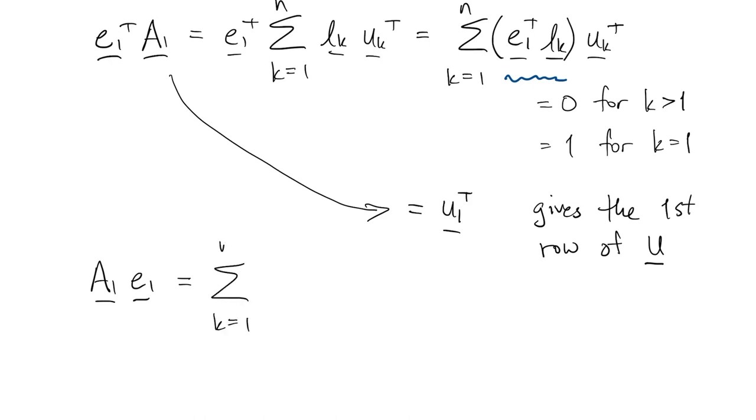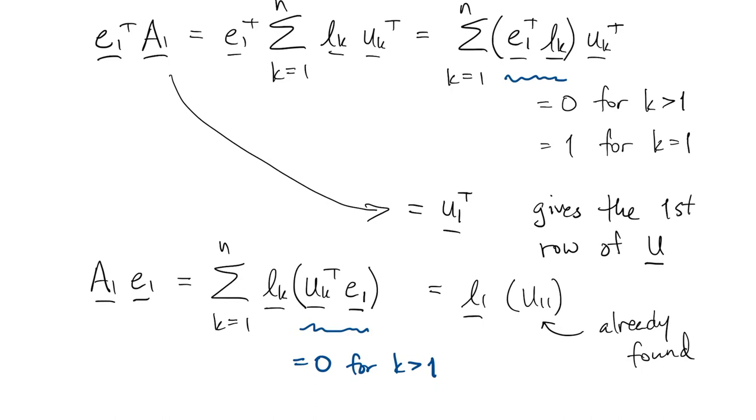Now if we look at the first column of A1, same kind of trick, we use associativity. We use the observation about that zero structure to say that this is zero for all the Ks greater than one. And then in the case of K equals one, we know that that's just U11, whatever that number is.